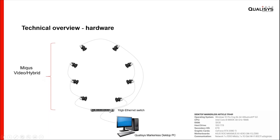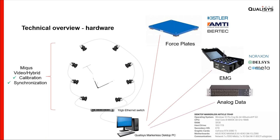The hardware setup looks very similar to a standard mocap system, except all cameras must be video or hybrid cameras. Because of the amount of video data, there is some special hardware required: a 10 gigabit Ethernet switch and a powerful computer to keep markerless processing time reasonable. With that setup, you calibrate the same way as a marker-based system and time synchronization is identical. This means you can add force plates, EMG, and analog data just like in a standard 3D mocap setup.